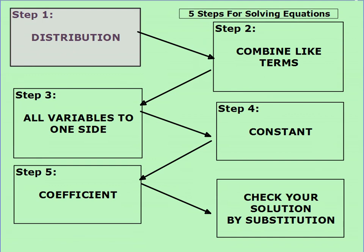The first thing to look for is whether there's any distribution that needs to be done. Distribution occurs when you have to multiply a term through a set of parentheses. So if there are any parentheses in your equation, most likely there's some distribution to be done.